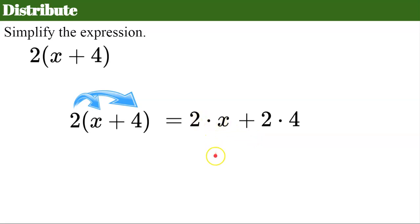So 2 multiplied by x is 2x. Add 2 times 4 is 8. So 2x plus 8 is 2 times the quantity x plus 4 in simplest form.